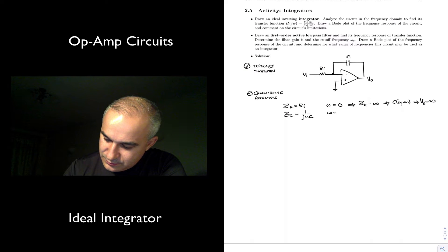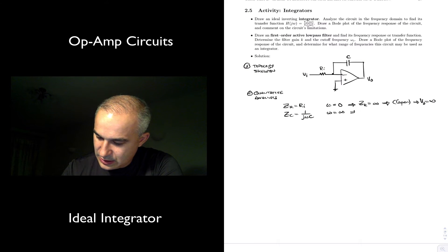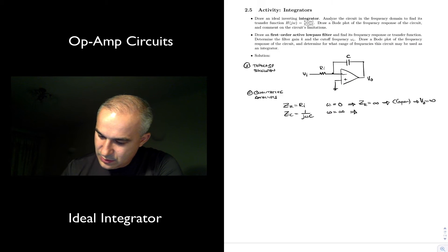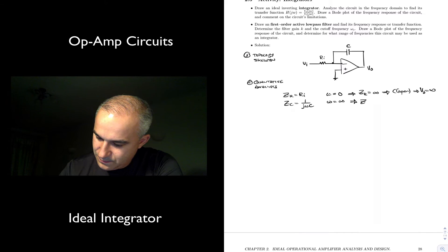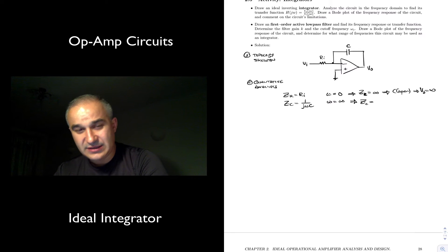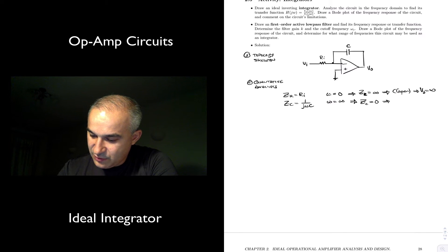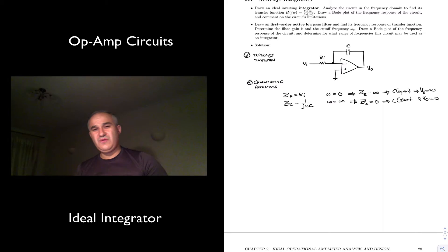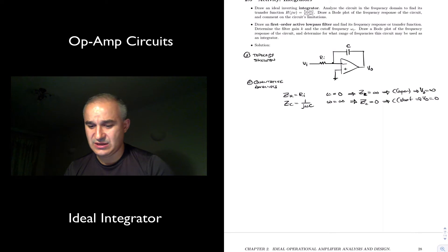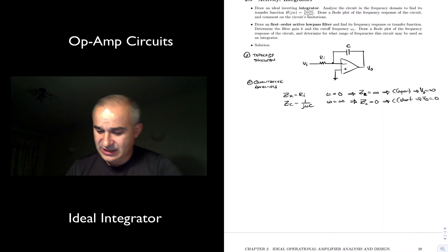At high frequencies, as we increase the frequency, the impedance of the capacitor is going to go down. So this is going to be zero. And what you get is that the capacitor is short. And the output is going to be zero. So if we wanted to think about this circuit as a filter, it is clearly going to be a low-pass filter, meaning low frequencies has high gain, and at high frequencies, the output is going to be zero.